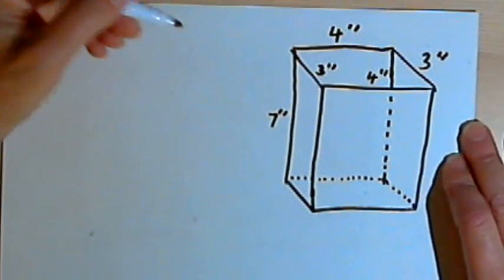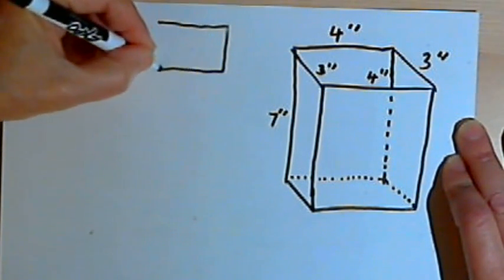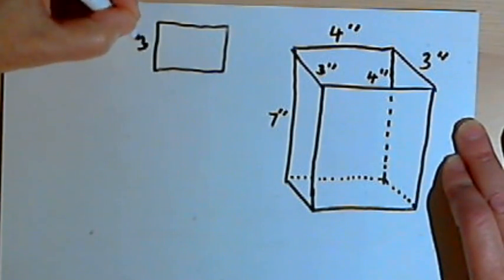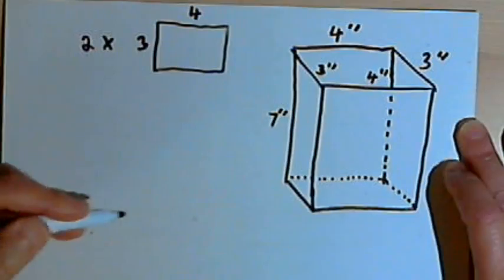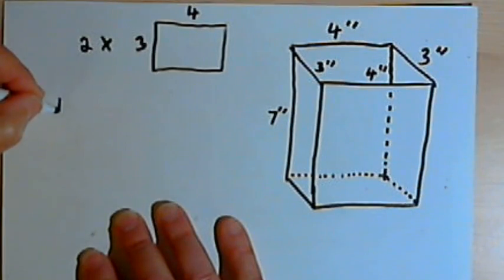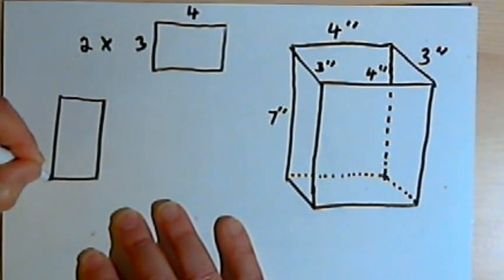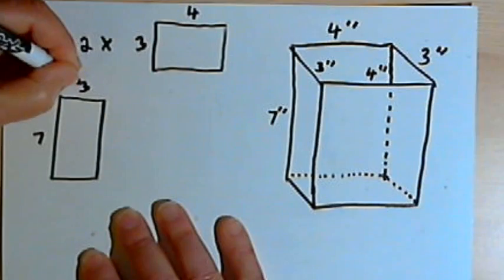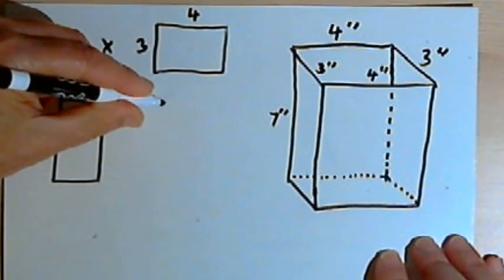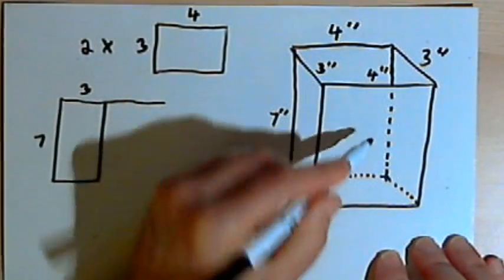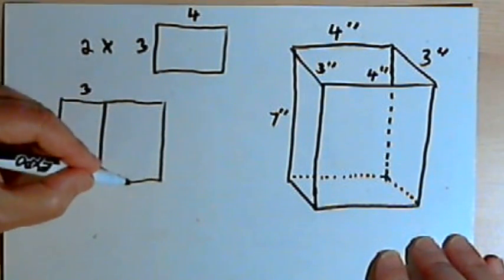We can think of ourselves as building this prism. We would have to have the two bases, so we're going to need two pieces of cardboard that are 3 inches by 4 inches. Then we'll need the four sides. We could make those four sides by having the first side, the one on the left. That's going to be a piece of cardboard 7 inches by 3 inches. And if we have a large piece of cardboard, we could draw the next side right onto it, right next to that first one. That's going to be 7 inches by 4 inches.